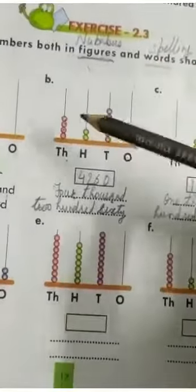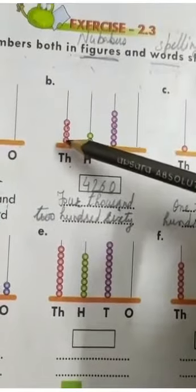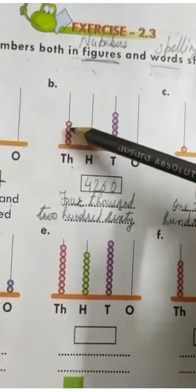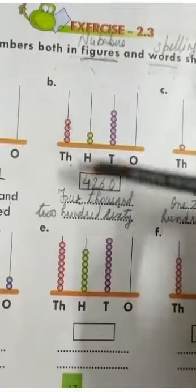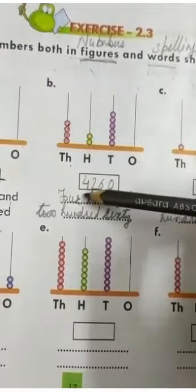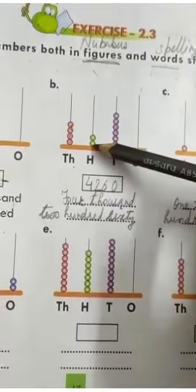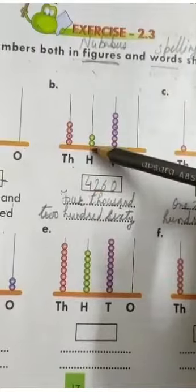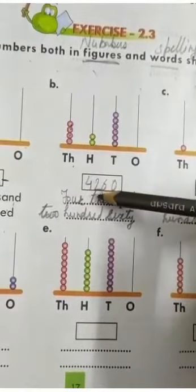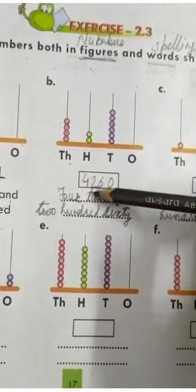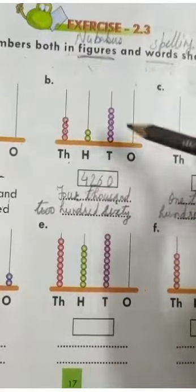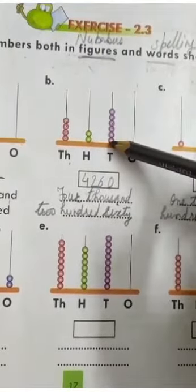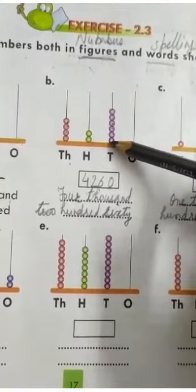Next: in 1000 how many beads are there? 1, 2, 3, 4 — so you will write 4 first. In the 100 place value, how many beads are there? 2 — so you will write 2. In the 10s place, how many beads are there? 6.